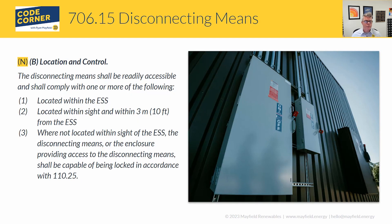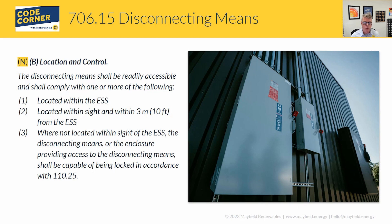One of the more significant areas of change is the list in 706.15(b) for location and control. It lists the requirements for the location and control of the disconnecting means. In 2023 it's worded as: the disconnecting means shall be readily accessible and shall comply with one or more of the following — whereas the 2020 version required you to meet all of those requirements. Now it's just one of the three.